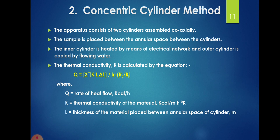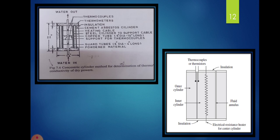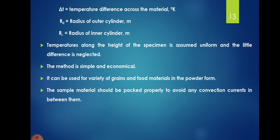The thermal conductivity k is calculated by the equation: q = (2πkLΔT) / ln(r₀/rᵢ). Where q is rate of heat flow (kcal/hr), k is thermal conductivity (kcal/(m·°K)), L is the thickness of material in the annular space (m), ΔT is temperature difference (°K), r₀ is the radius of the outer cylinder (m), and rᵢ is the radius of the inner cylinder (m).